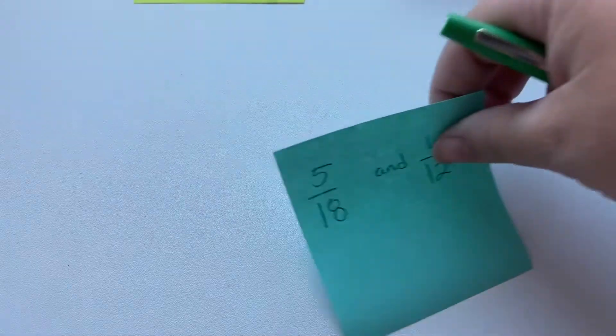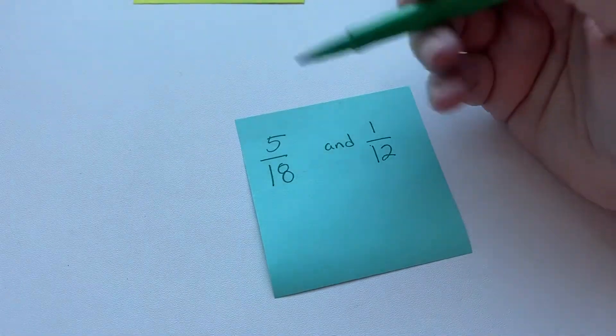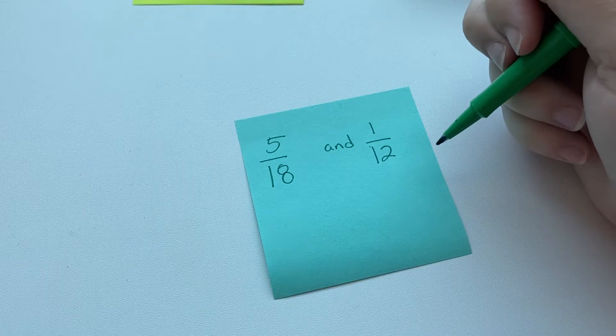Okay. Now sometimes you look at a number and you're like, I don't want to multiply by 18. I don't want to multiply everything by 12. So there is another way, which is to find a least common multiple.